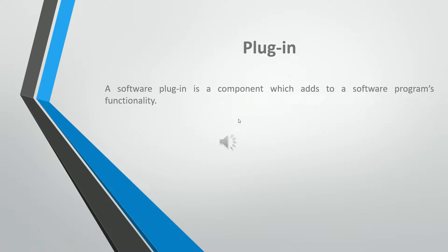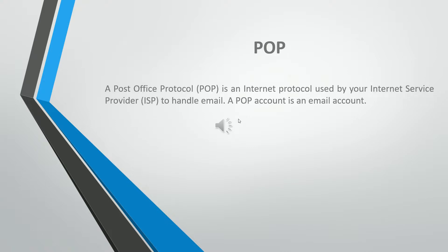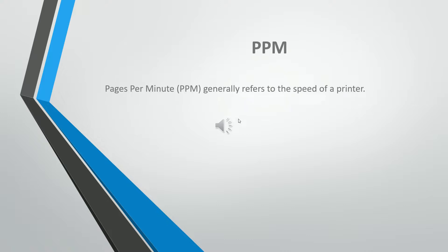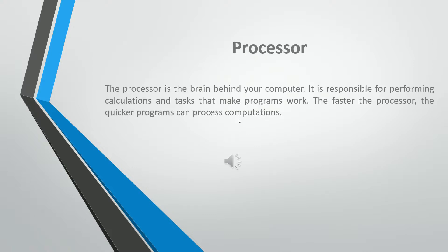A software plug-in is a component which adds to a software program's functionality. The Post Office Protocol (POP) is an internet protocol used by your internet service provider (ISP) to handle email. A POP account is an email account. Pages per minute (PPM) generally refers to the speed of a printer. The processor is the brain behind your computer. It is responsible for performing calculations and tasks that make programs work. The faster the processor, the quicker programs can process computations.